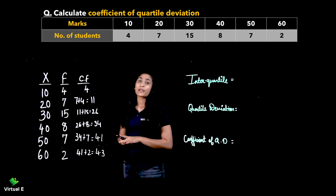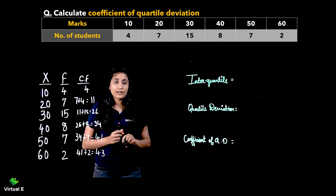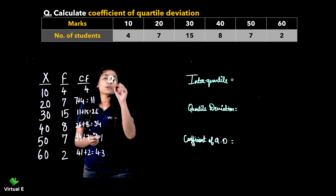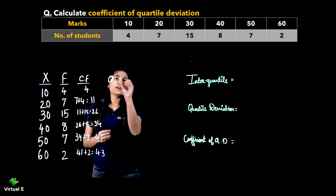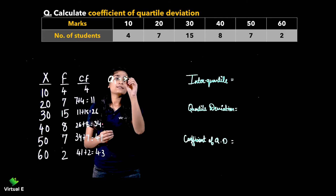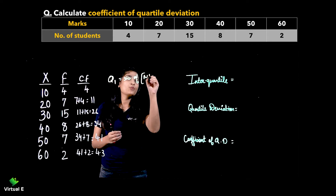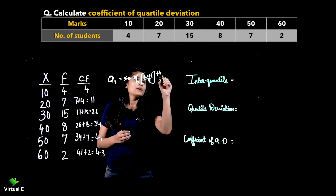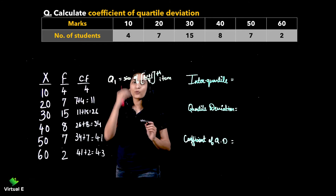Now we will find out Q1 and Q3. To find out Q1, the formula is: size of the (N+1)/4th item. This is our formula for Q1.